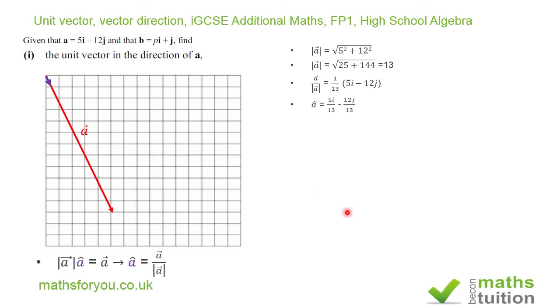Now for part 2, it says find the values of the constants p and q such that qa plus b is equal to 19i minus 23j.